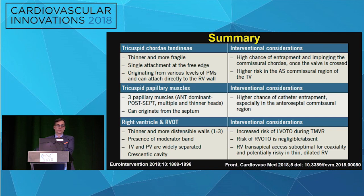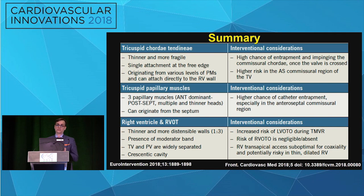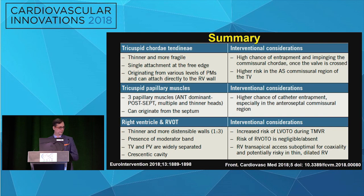The chordae are thinner compared to the mitral side and originate from various levels. You have three papillary muscles with the anterior being most dominant. Remember that at the commissures, catheter entrapment becomes much more possible. The right ventricle is thinner and easier to perforate, with the moderator band sitting under the anterior-septal leaflet coaptation point. The pulmonic and tricuspid valves are widely separated, so there's typically no risk of RVOT obstruction as on the left side. The right ventricle has a crescent-shaped cavity — right hand over left like a glove.